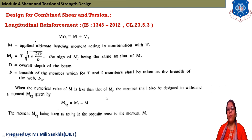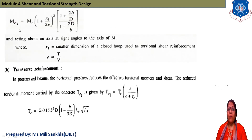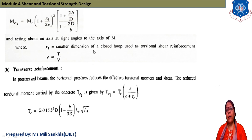ME2 is taken as acting in the opposing sense to moment M. ME3 is the third moment: ME3 = MT × (1 + X1/(2E)) × √(1 + 2B/D) × √(1 + 2D/B), acting about an axis at right angles to the axis of M. X1 is the smaller dimension of the closed loop, and eccentricity E = T/V, where T is torsion and V is shear force.